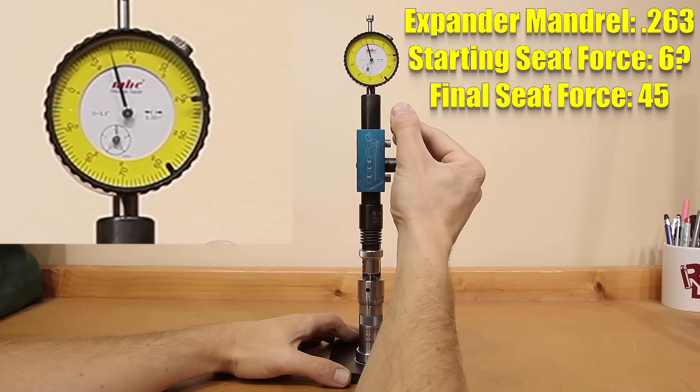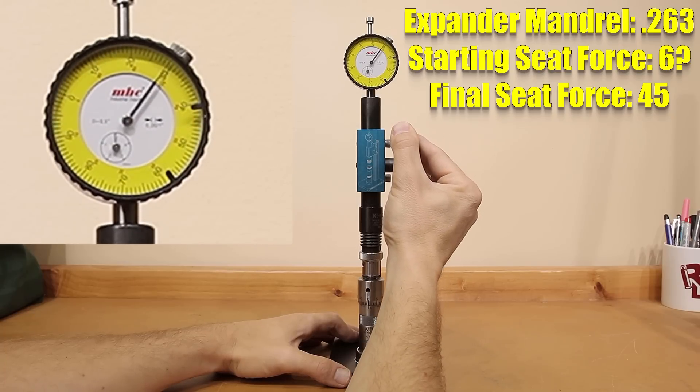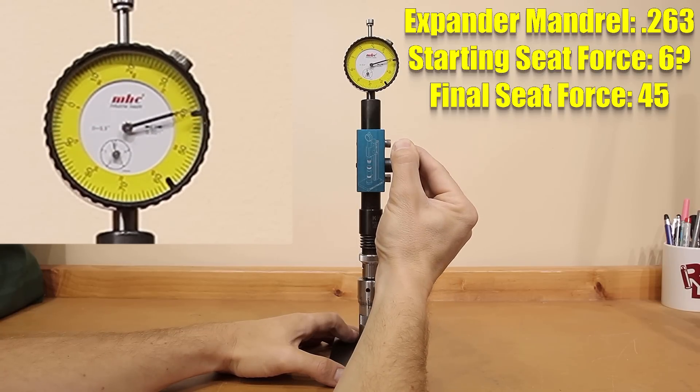Moving on to the 0.263 mandrel, our starting force dropped to 6 pounds. Our final force ended up at 45 pounds.